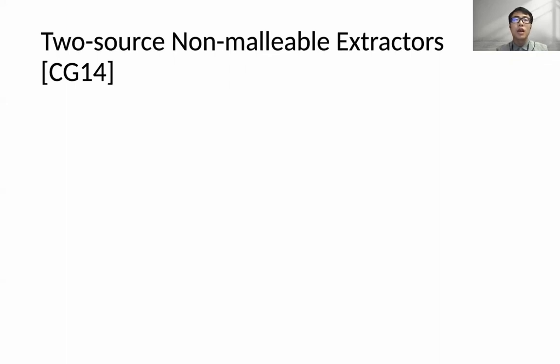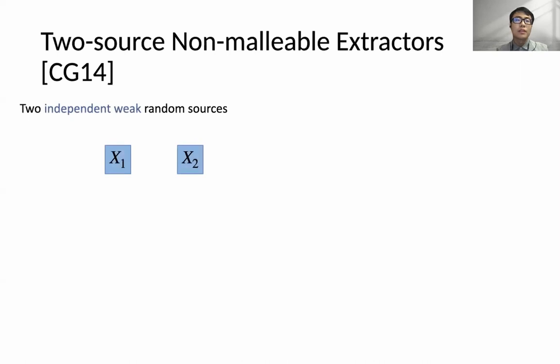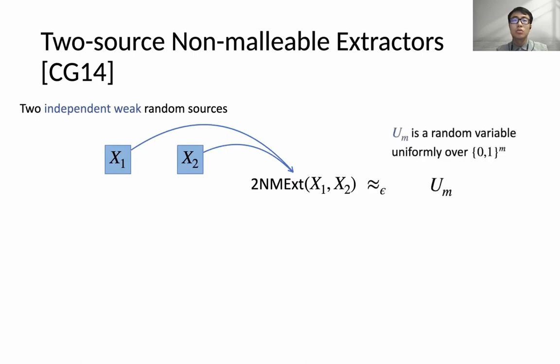I will start by introducing what is a two-source non-malleable extractor. The notion was introduced by Cheraghchi and Guruswami in 2014. In this setting, you have two independent weak random sources named X1 and X2. The word 'weak' means that both sources are not uniformly random, and you want to use an extractor to extract n-bit randomness from the sources that are close to uniform.